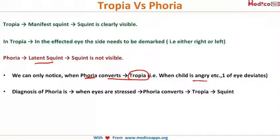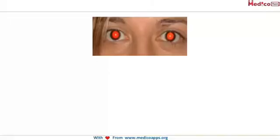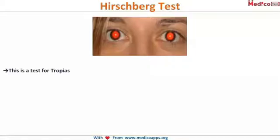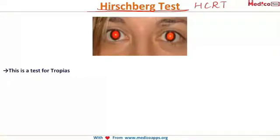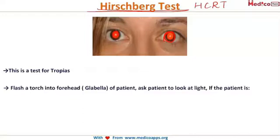You can't always wait for the child to get distracted, so we perform tests. For tropia, the important test is the Hirschberg's Corneal Reflex Test, also known as HCRT. You can see here a yellow dot in the middle of the fundal reflex — that represents the flashlight you place on the patient's glabella, asking the patient to look at the torch.